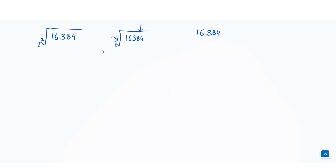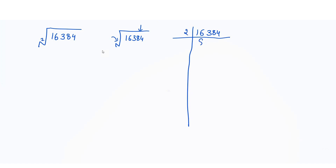To make the prime factors, I will divide this number with prime numbers and check which prime number divides it. This number is divisible by 2, so I write down 2 here. When I divide it I get the next value, and we will keep on doing it until we get 1 at the end.